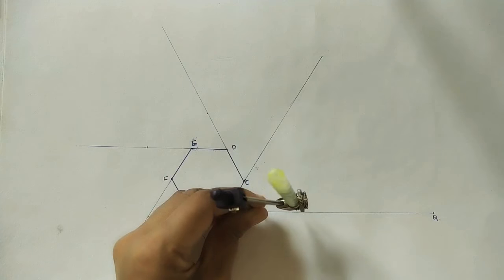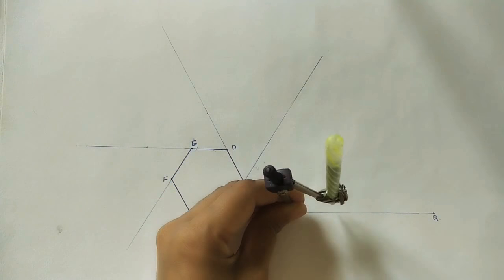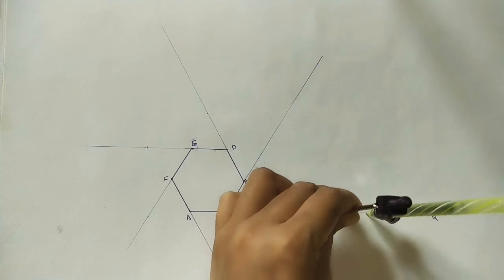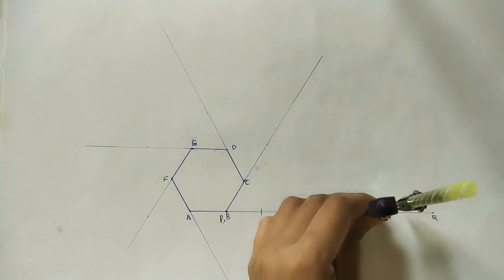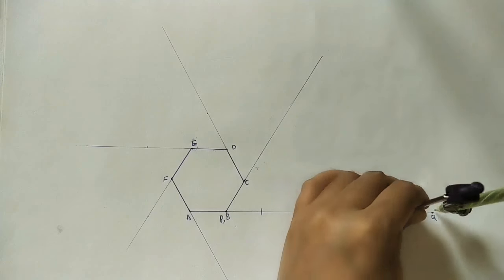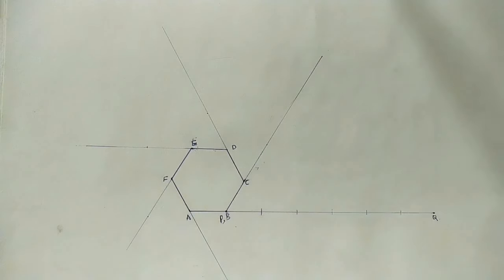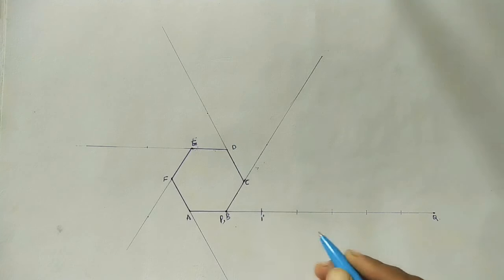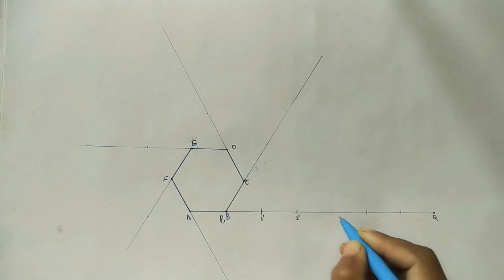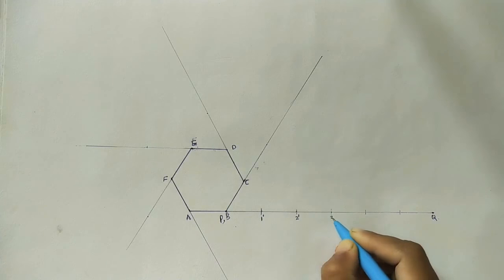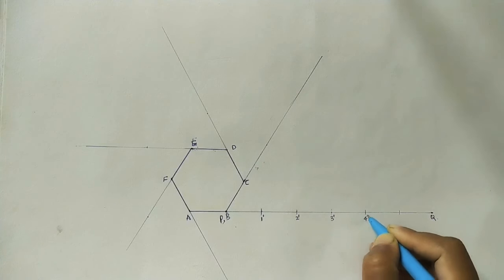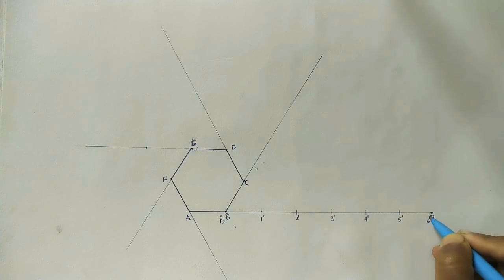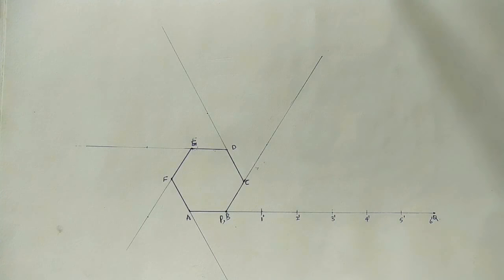Continue marking equal divisions along PQ: the second, third, fourth, fifth, and sixth parts. Label the intersection points as 1-dash, 2-dash, 3-dash, 4-dash, 5-dash, and 6-dash. This completes the six equal divisions of PQ.